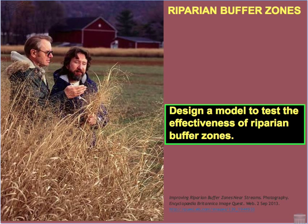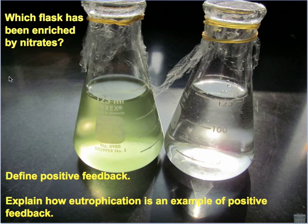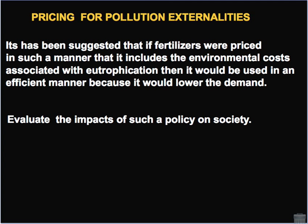Consider designing a model to test the effectiveness of riparian buffer zones — which flask has been enriched by nitrates? That answer should be obvious. Define positive feedback and explain how eutrophication is an example of positive feedback. To extend your thinking: it has been suggested that if fertilizers were priced in a manner that includes the external costs associated with eutrophication, they would be used more efficiently because it would automatically lower demand. Think carefully about this suggestion and evaluate the impacts of such a policy on society.